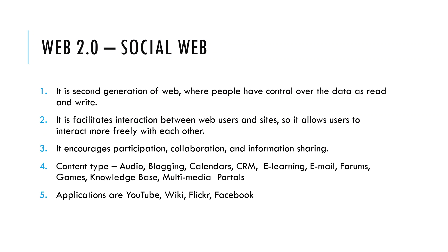The next generation is Web 2.0, called the social web. It is the second generation where users have control over data with read and write capabilities. It facilitates interaction between web users and sites, allowing users to interact more freely. It increased participation, collaboration, and information sharing. Content types include audio, blogging, calendars, CRM, e-learning, emails, forums, games, knowledge bases, and multimedia portals. Key applications include YouTube, wikis, Flickr, and Facebook.